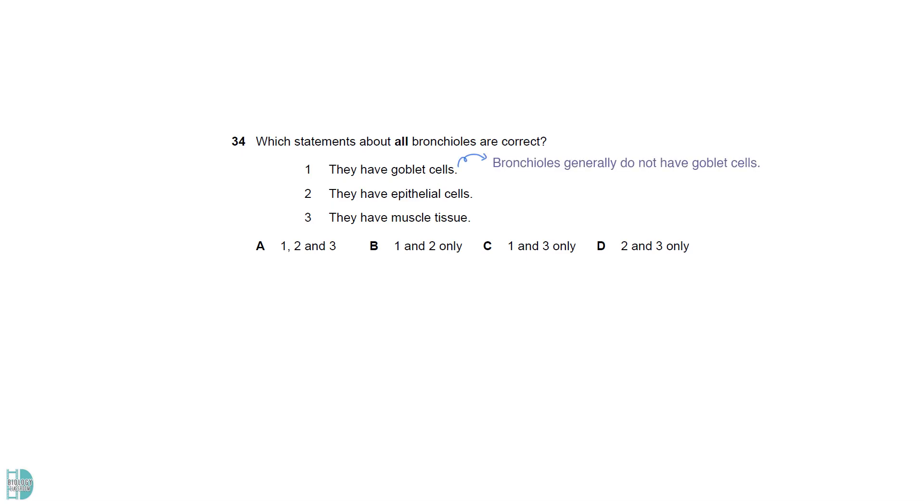Bronchioles generally do not have goblet cells, so one is wrong. All airways contain epithelial cells on the surface facing the lumen. Muscle tissue can be found in all bronchioles too. It is important to change their diameters.